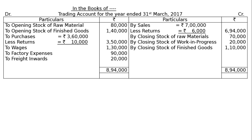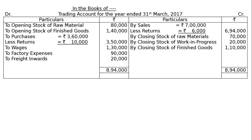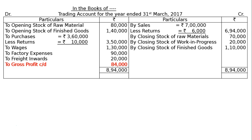Then total the credit side, that is Rs. 8,94,000, and take it to the debit side. Find out the gap to gross profit carried down — to gross profit carried down Rs. 84,000. This is the final answer.